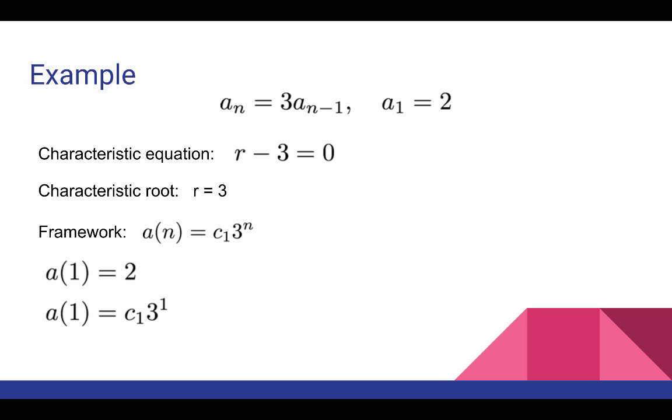Our job now is to find the value of c1 so that the initial condition is satisfied. We do that by noticing that when n equals one, a(1) is equal to two because that's what the initial condition is. But at the same time, the framework says that a(1) is c1 times three to the first, by plugging in n equals one into the formula for the framework.